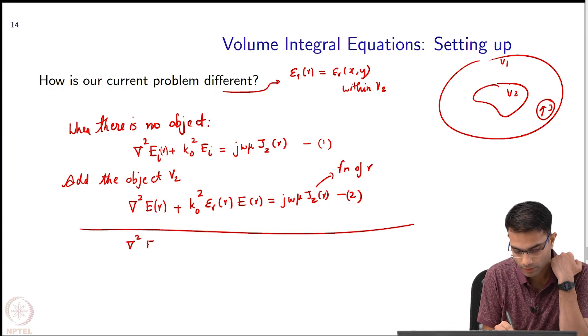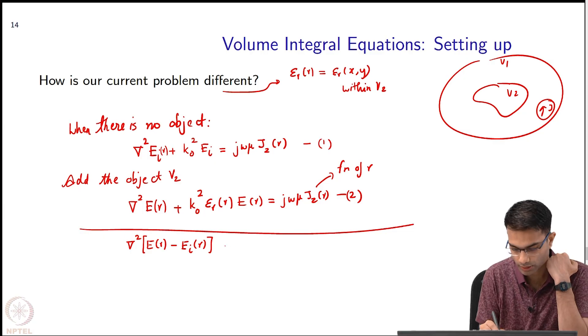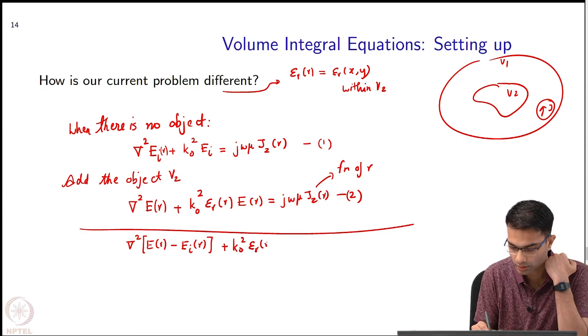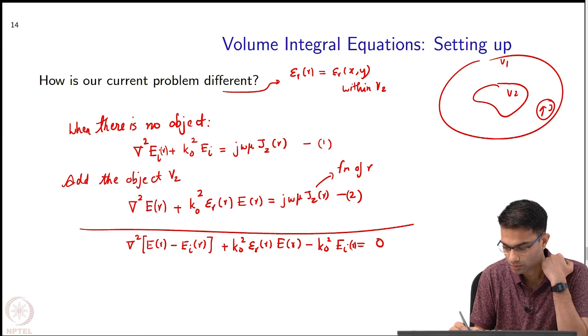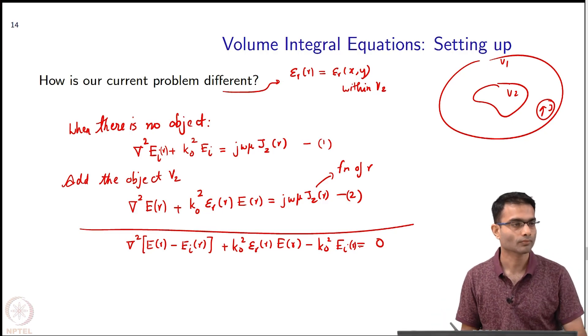If I do that what do I get is this: del squared e r minus e i that is common. Then I have a k naught squared epsilon r r e r minus k naught squared e i is equal to 0.